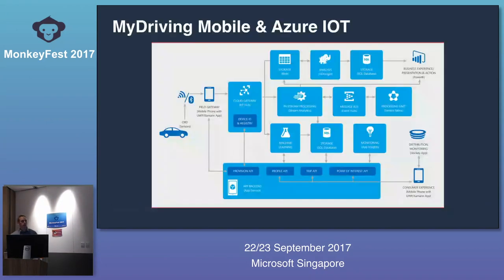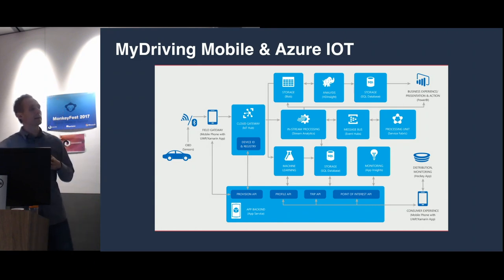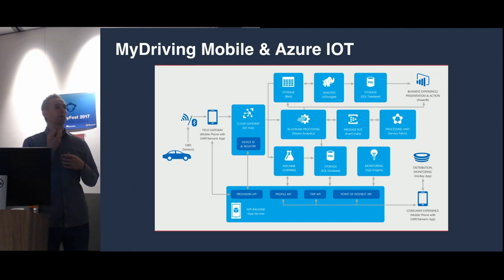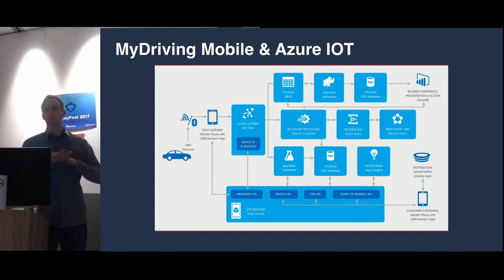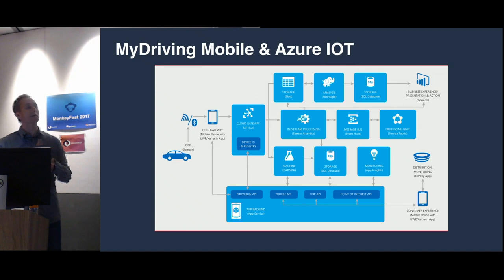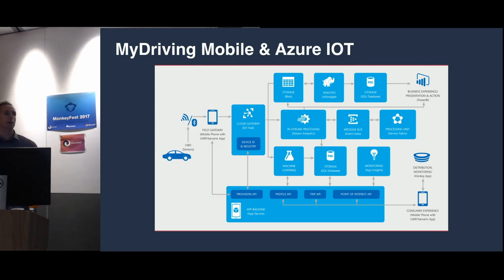The sample you may already know — it was published at Build last year. It's called My Driving, and it's a mobile app built with Xamarin targeting iOS, Android, and Windows. It's an IoT app intended to track your driving habits. You buy an OBD device — an onboard device you plug into your car — that gets telemetry like speed, fuel usage, and engine load, transmitting that via Wi-Fi or Bluetooth to your mobile device. The mobile device combines that with GPS and sends it up to the Azure IoT Hub. There's machine learning applying a rating about your driving. The whole thing is open source on Microsoft's GitHub page.